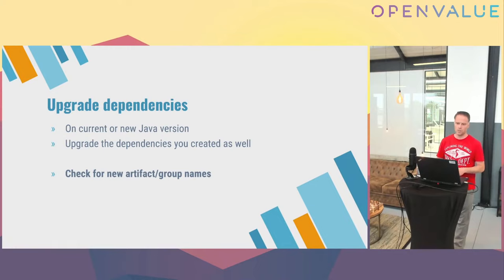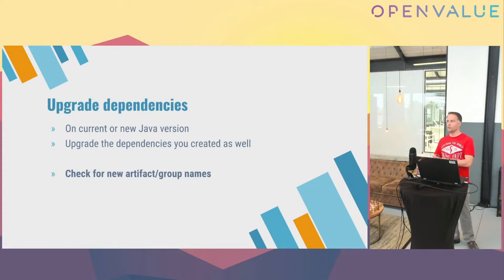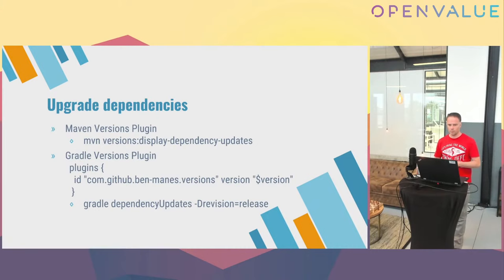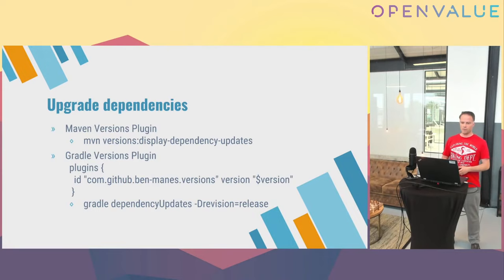A lot of people forget tools like Renovate — you can run it and it automatically scans your codebase. If there's a new version for a dependency, you get a pull request and you only have to click merge. The tricky thing is if the artifact or group names change — if a dependency is forked and they change the naming, you don't automatically get the new version. There are plugins like the Maven Versions plugin to display the latest available versions. It's a good practice to regularly — maybe once per sprint or once per month — make sure your dependencies are on the latest version.